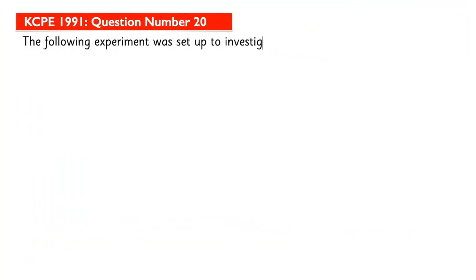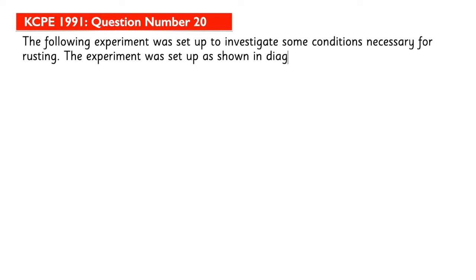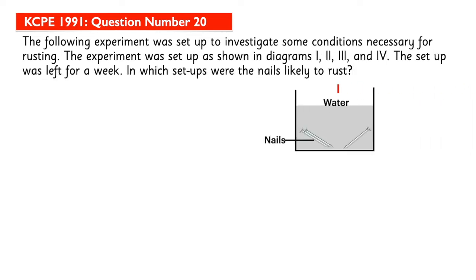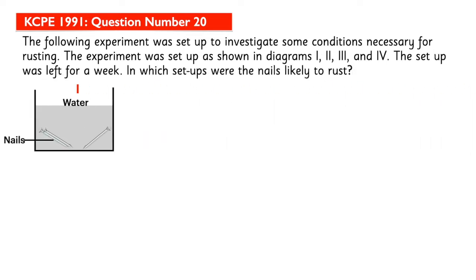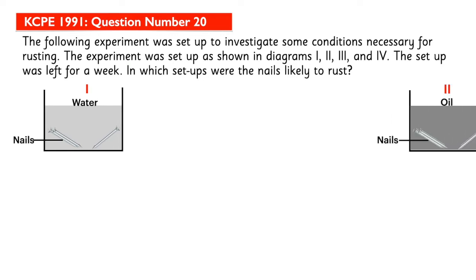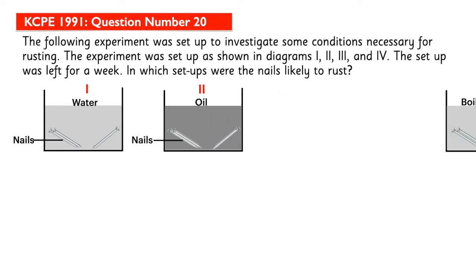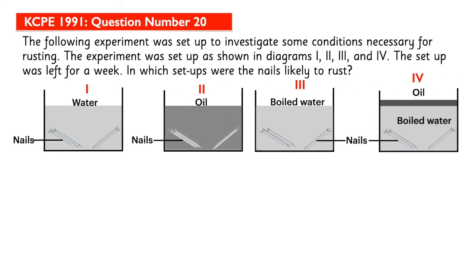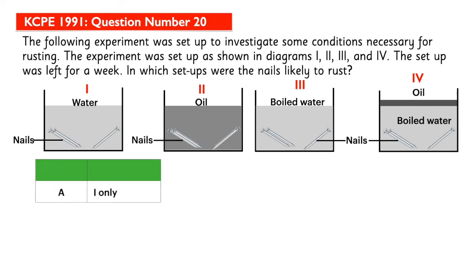The following experiment was set up to investigate some conditions necessary for rusting. The experiment was set up as shown in the diagrams labeled 1, 2, 3, and 4. The setup was left for one week. In which setups were the nails likely to rust?